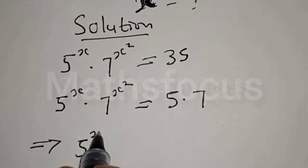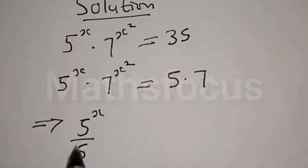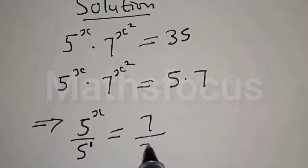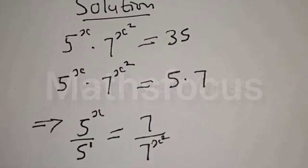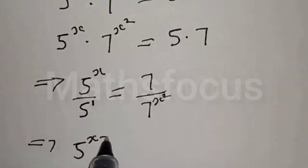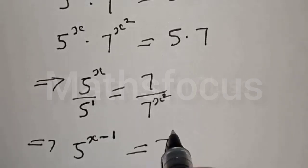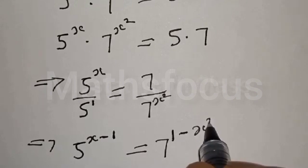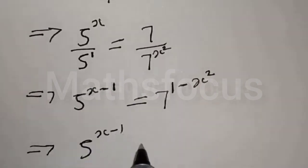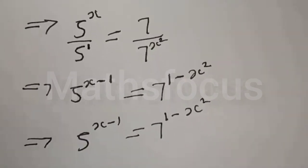We have 5 raised to power x. This is also 5 divided by 5, and 5 is the same as 5 raised to power 1, to be equal to 7 divided by 7 raised to power x. We have 5 raised to power x minus 1 to be equal to 7 raised to power 1 minus x squared. Let's take the log of both sides.